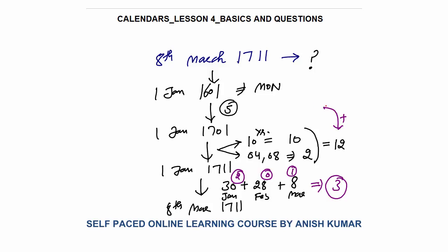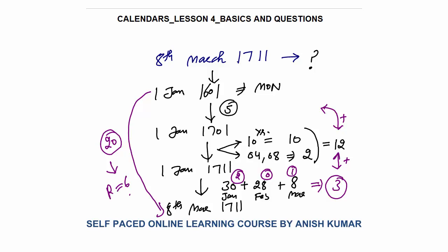Total count: 5 (from 1601 to 1701) + 12 (from 1701 to Jan 1 1711) + 3 (Jan 1 to March 8) = 20 odd days. 20÷7 gives remainder 6. So Monday plus 6 is the 7th day, which is Sunday. So 8th of March 1711 is Sunday — that is your final answer.